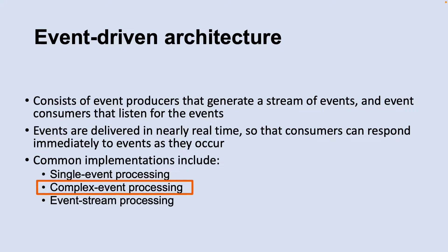Another variation is complex event processing. In this scenario a consumer processes a series of events, observing patterns in the event data by using a technology such as Azure Stream Analytics or Apache Storm. The third variation is event stream processing, where you can use a data streaming platform such as Azure IoT Hub or Apache Kafka as a pipeline to ingest events and feed them to stream processors.